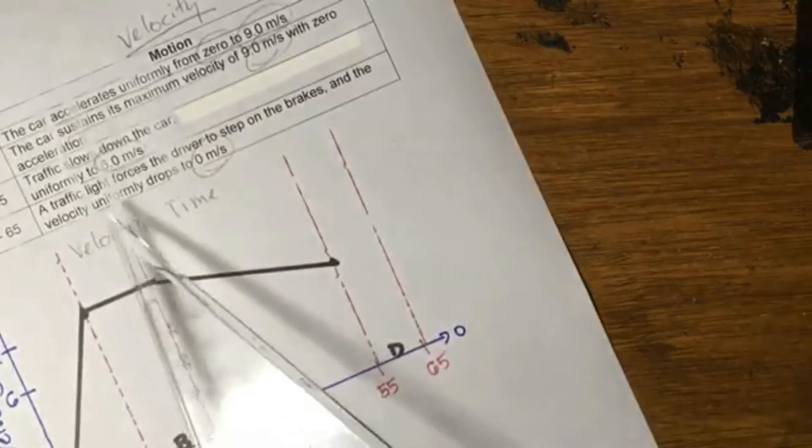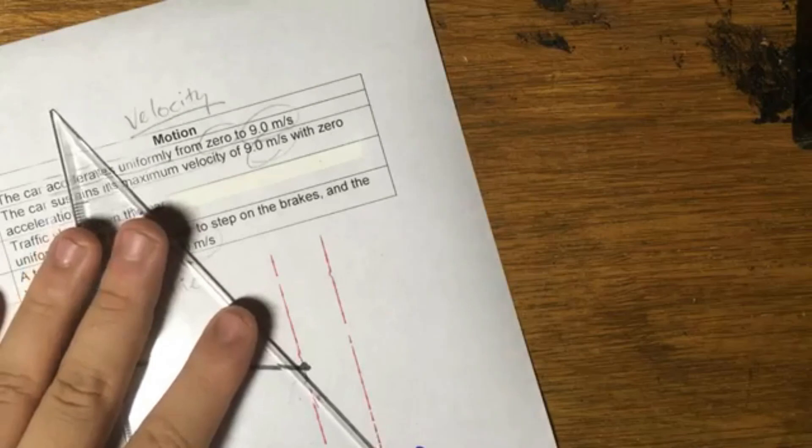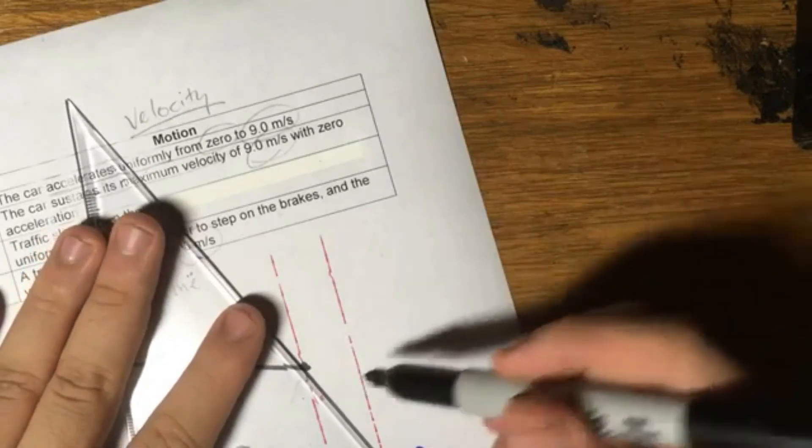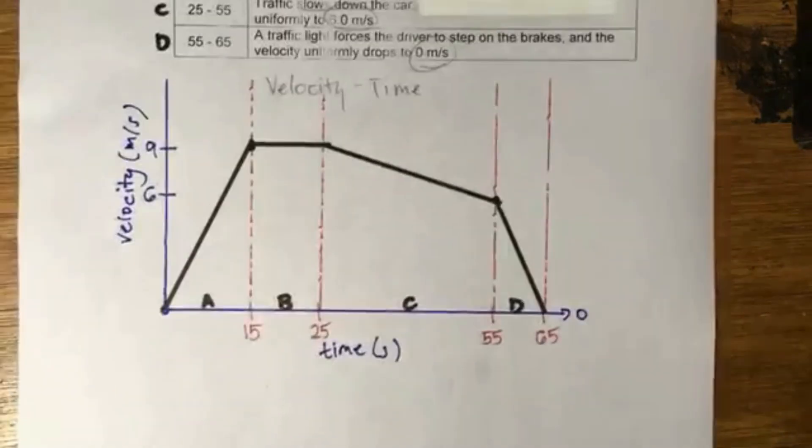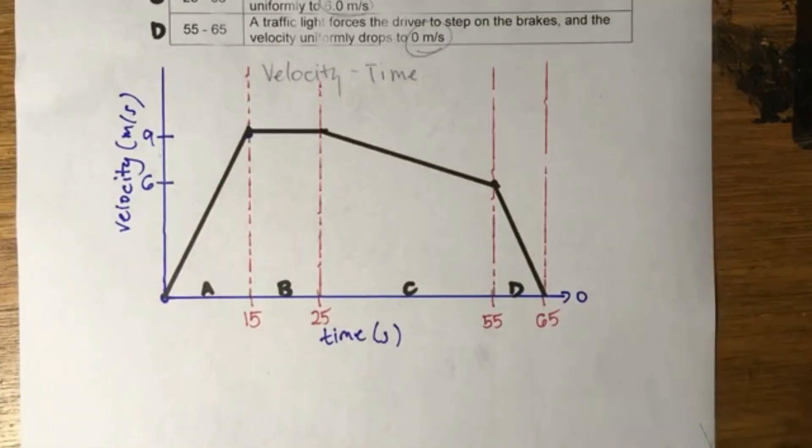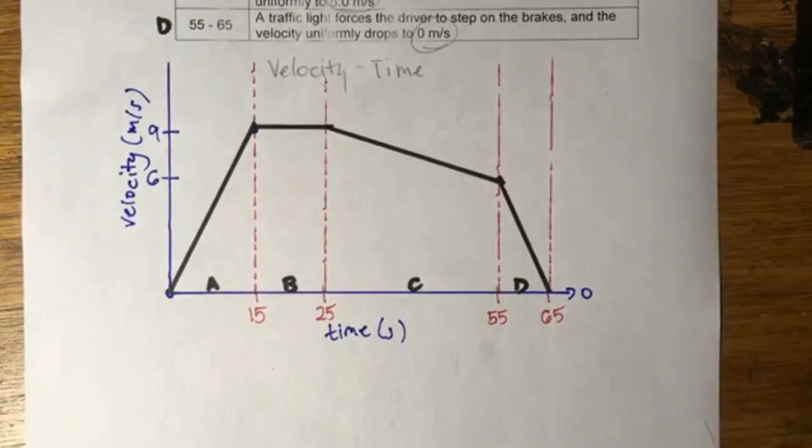And because it does it uniformly, it's just simply one straight line going from here to here. So this is your velocity-time graph for this case of motion, this scenario.